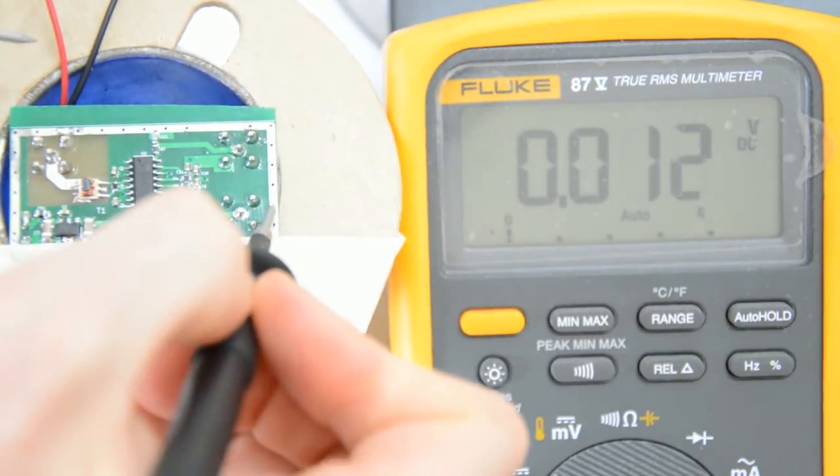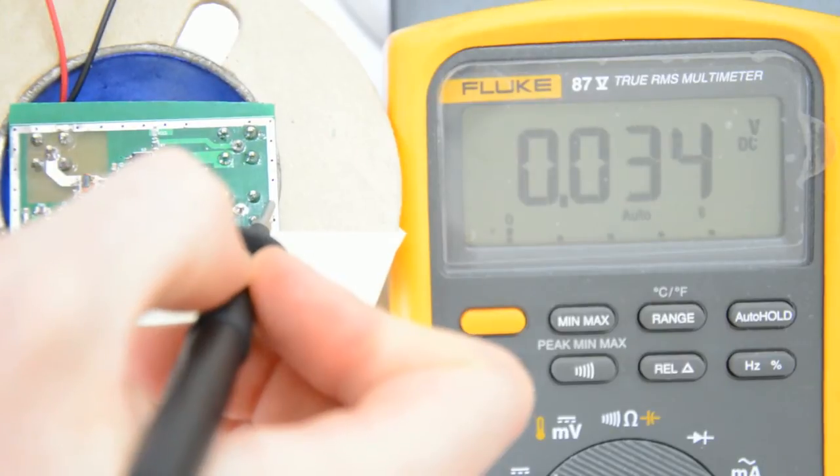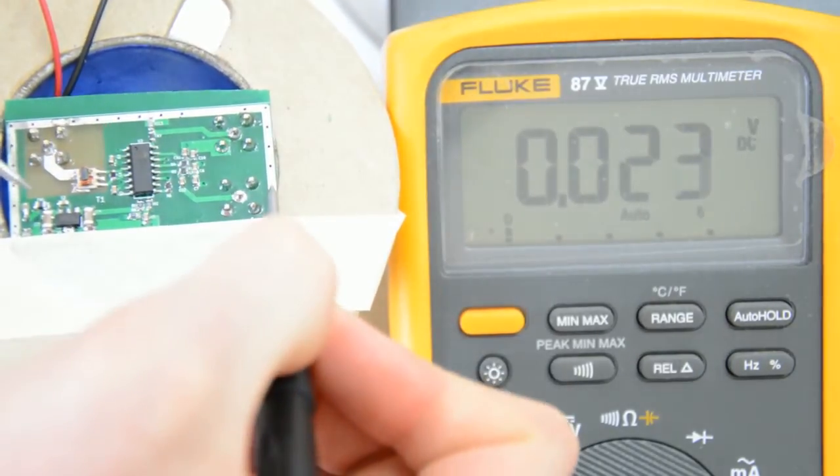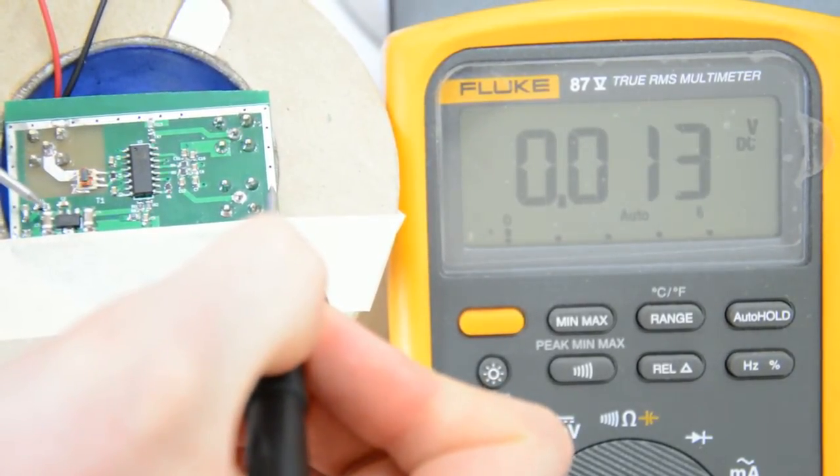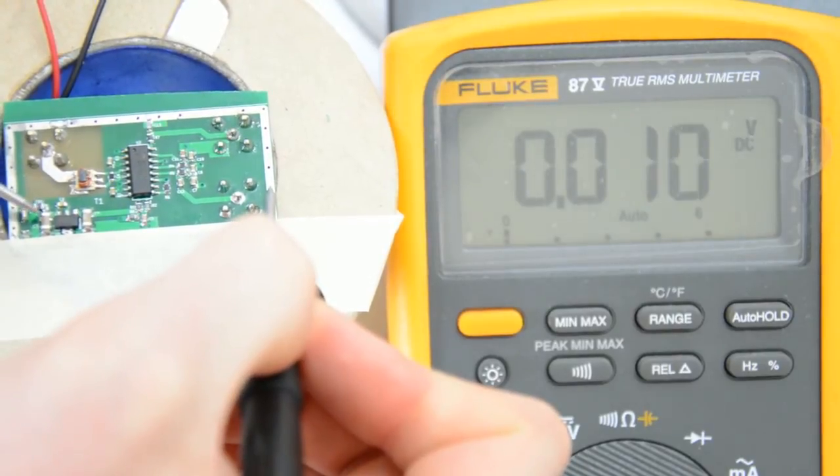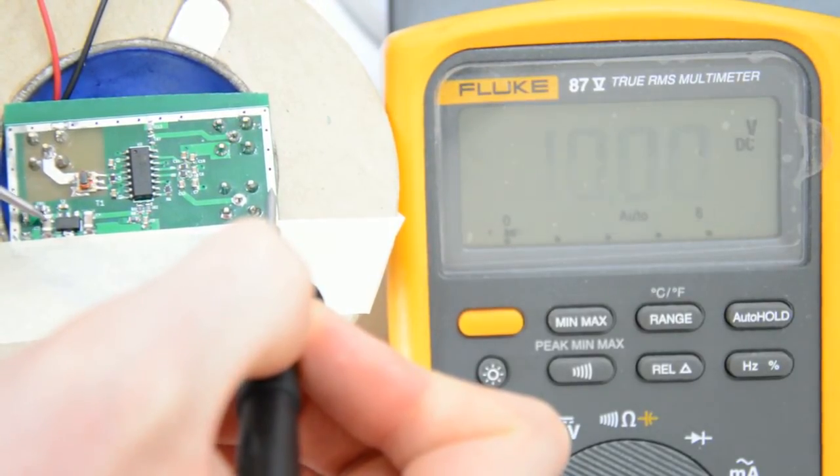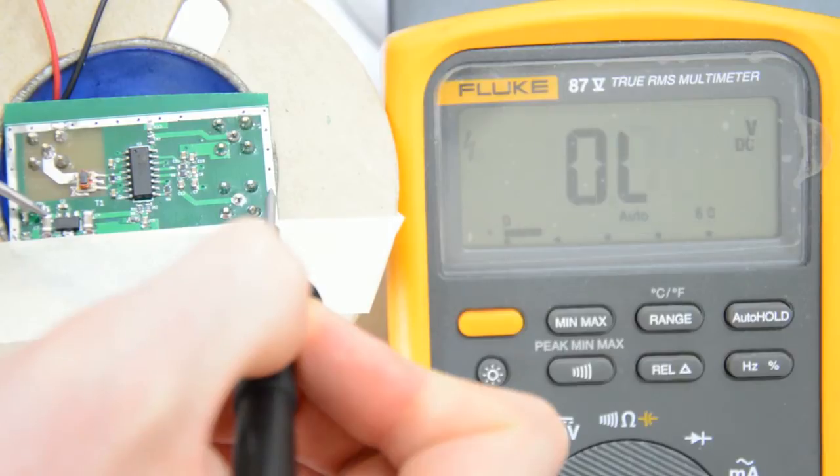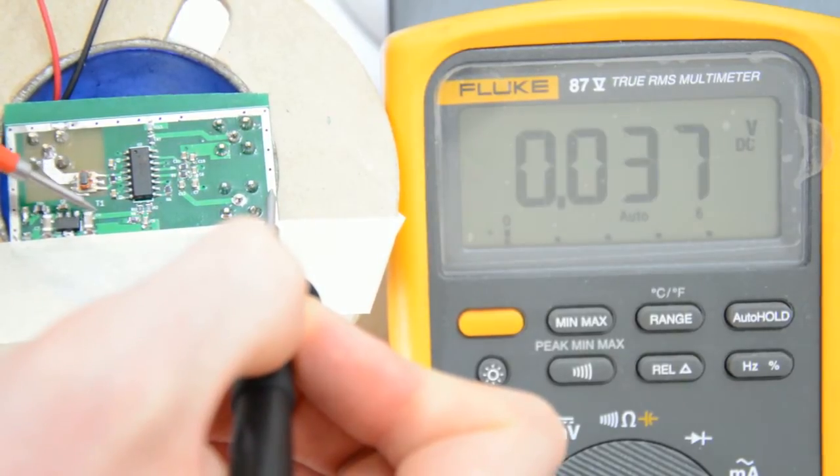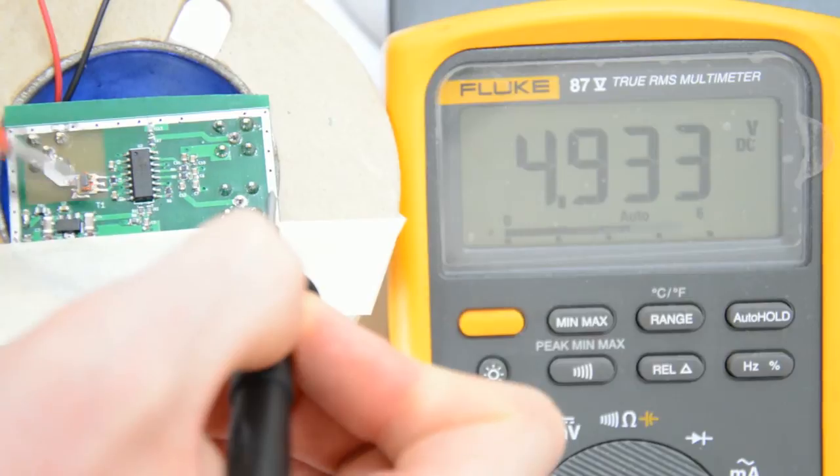So first I'm going to measure the input of the regulator. I'll use this capacitor here instead of the pin itself just because it's convenient. And that's 10 volts, so that's fine. And the output should be about 5 volts and 4.933.